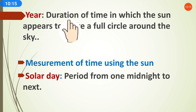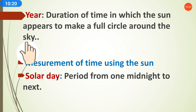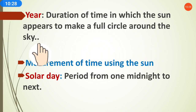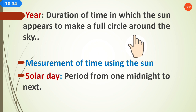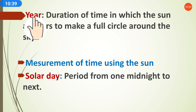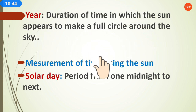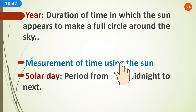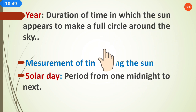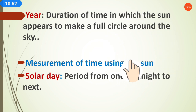Year is also a periodic event. The definition of year is: the duration of time in which the sun appears to make a full circle around the sky — meaning the time in which the earth completes one full revolution around the sun. The earth takes one year to complete its revolution around the sun.